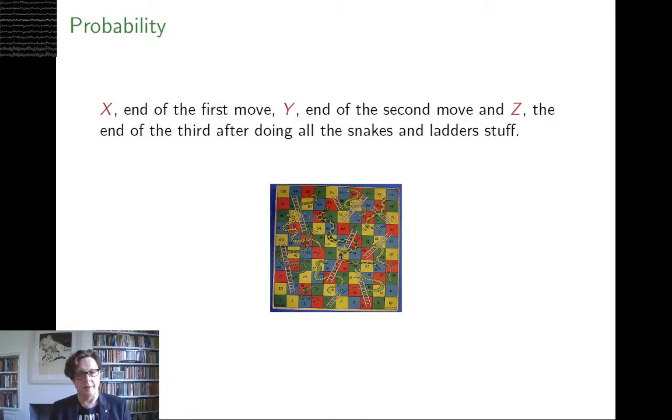Y is where you are at the end of the, oh it's also true, X could have the value 15 or 34. If you roll a 4 obviously as we saw you end up at 15, if you roll a 7 you end up at 34.